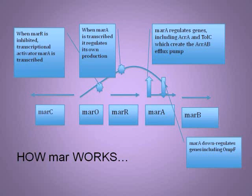This is an overview of the MAR-RAB process. From the operator, it can either go towards MAR-C or MAR-RAB. MAR-C creates a protein that has not yet been researched, but when MAR-R is inhibited from binding to the operator MAR-O, the transcriptional activator MAR-A is transcribed. MAR-A, when transcribed, regulates around 47 genes, including ACR-A and TOL-C, which are both components of the ACR-AB efflux pump. MAR-A also down-regulates 15 genes, including OMPF, an outer protein through which hydrophilic substances enter the cell. Once the transcriptional activator MAR-A is transcribed, it up-regulates its own production.